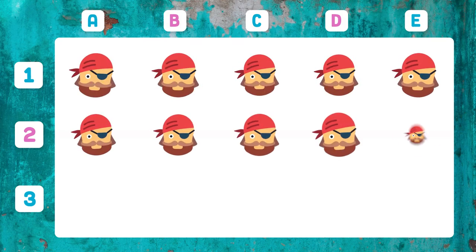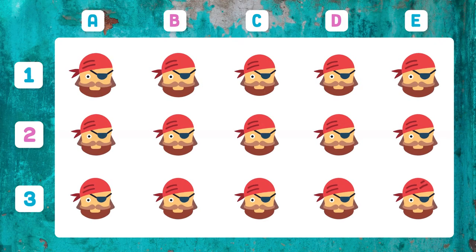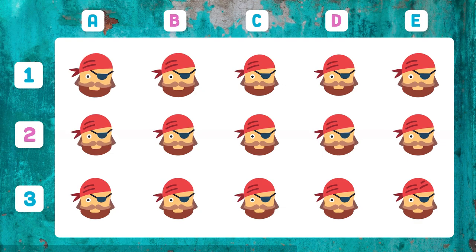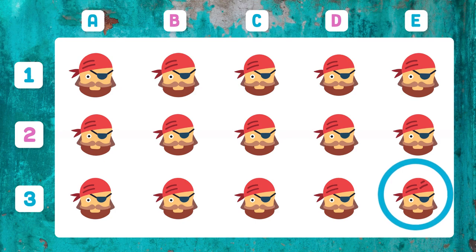Which pirate is different from the others? The pirate who appears in 3B — his hat is more wrinkled.